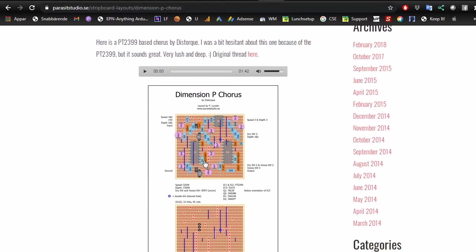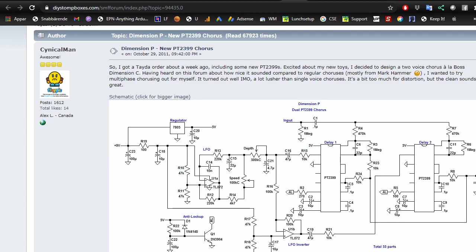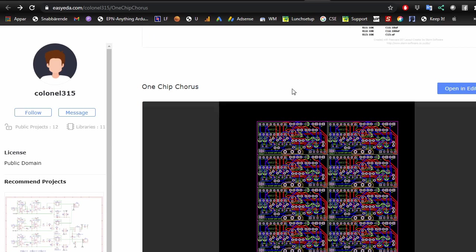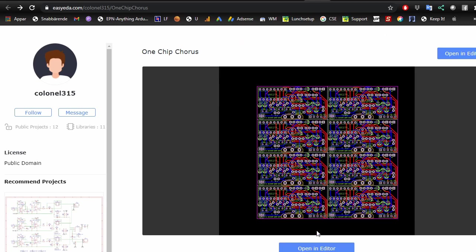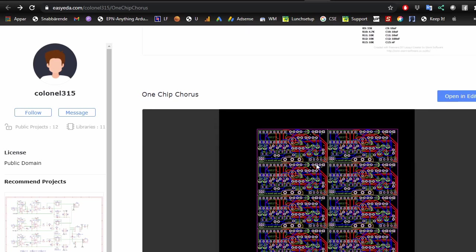There's a lot of stuff on the Dimension P. If you go to parasitstudio.se you can listen to it, it's a really nice chorus and it's talked about a lot. But I also want to mention Colonel 315 over on ECEDA has this one chip chorus that actually has the Gerber files available for everyone to download or order from JLCPCB. So I took the opportunity to order this whole bunch. I'm going to try it, hopefully it's going to work. Thank you Colonel 315.